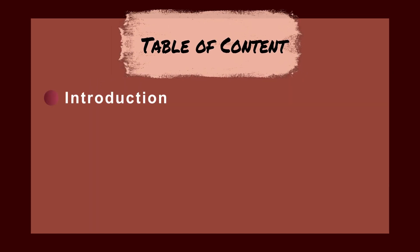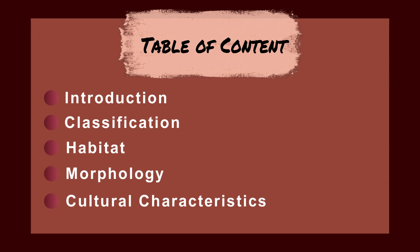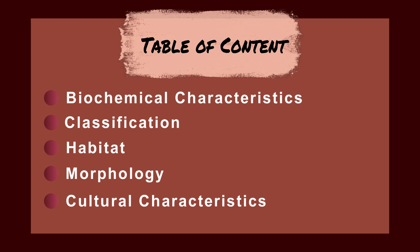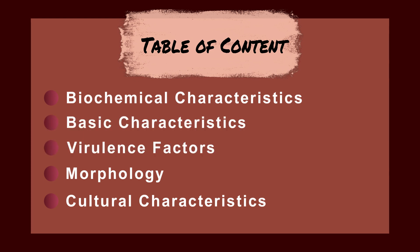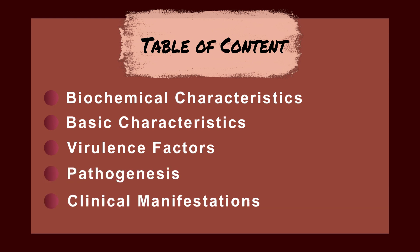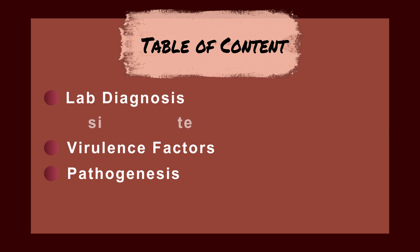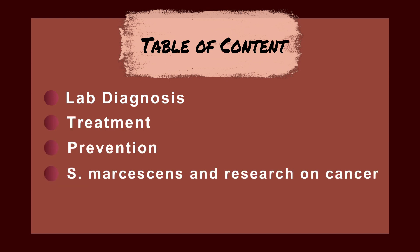Let's see the table of contents of today's topic. We will go through the introduction, classification, habitat, morphology, cultural characteristics, biochemical characteristics, virulence factors, pathogenesis, clinical manifestations, lab diagnosis, treatment, prevention, and lastly research on cancer.